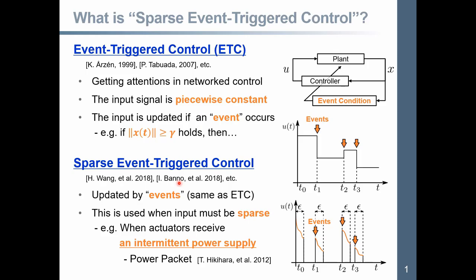Inspired by this method, sparse event-triggered control was recently proposed. In this method, the input is updated by an event like normal event-triggered control. But after time epsilon is elapsed, the value of input will be zero. And then, if the event occurs, then non-zero input is generated again.